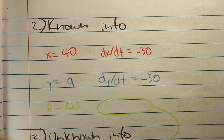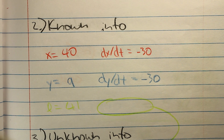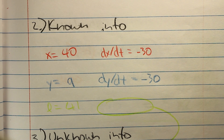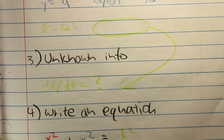After drawing the picture, a good next step is to take note of all the known information, from which you can fill in equations and get the answer. With this problem we know that x is 40, dx/dt is negative 30, y is nine, dy/dt is negative 30, and L is 41. However, we are searching for dL/dt, which is the rate at which the distance between the two cars is changing.